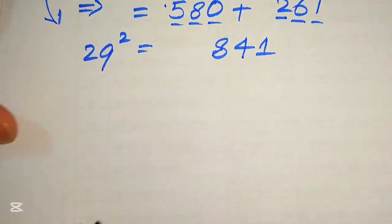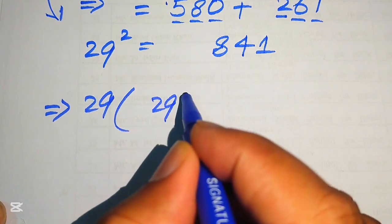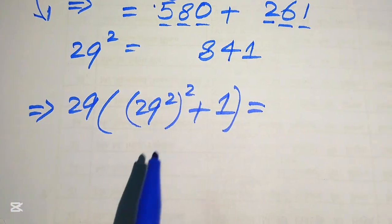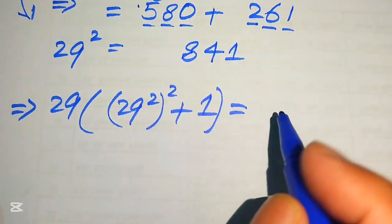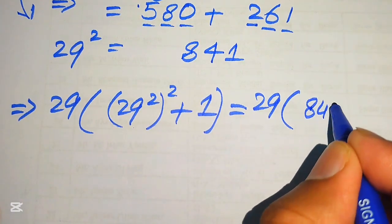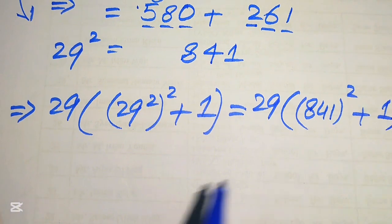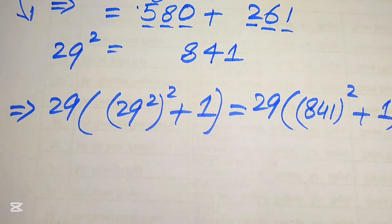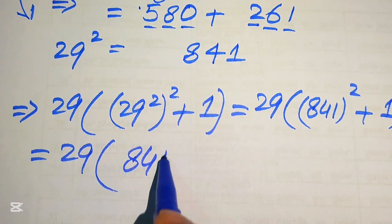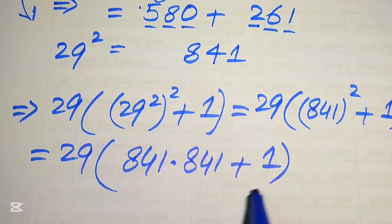We move back and copy down the expression: 29 times of 29 squared, whole squared, plus 1. We replace the value of 29 squared with 841, so it becomes 29 multiplied by 841 squared plus 1. Our next task is to find the value of 841 squared, meaning we multiply 841 by 841 and at the end add 1.